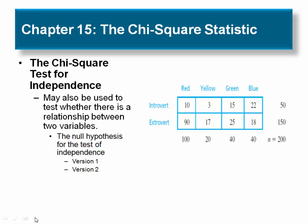The second variation of the chi-square test statistic you will learn is the chi-square test for independence. The table on the slide is taken from Table 15.4 on page 522 of your text and shows color preferences according to personality types.